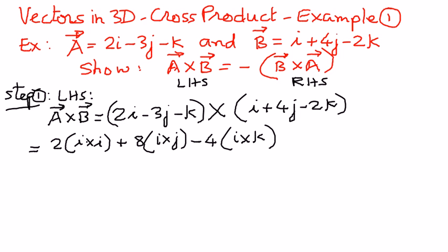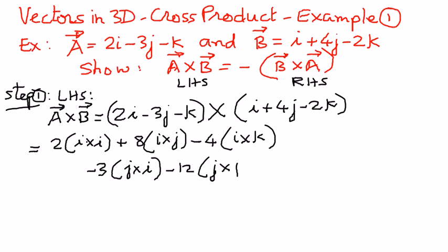Then we go to the second component. We'll take negative 3 times 1 is negative 3 times j cross i, then negative 3 times positive 4 is negative 12 times j cross j, and then negative 3 times negative 2 is positive 6 times j cross k. And then we've exhausted the second component, so we go to the third component of the first vector and distribute it out.